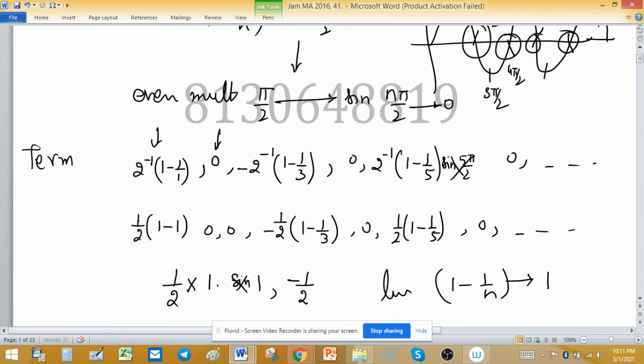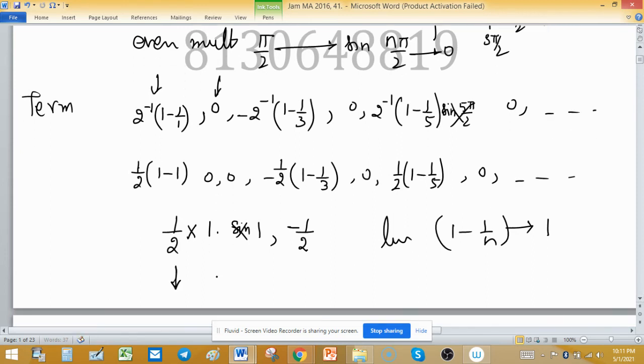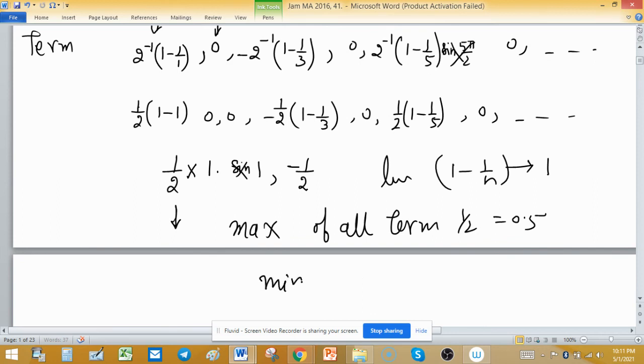So the max value, as you can see, is 1/2. This is the max of all terms, which means 0.5. And the min of all terms, because some terms are negative and others are less, the min term is -1/2.